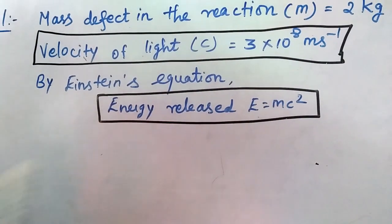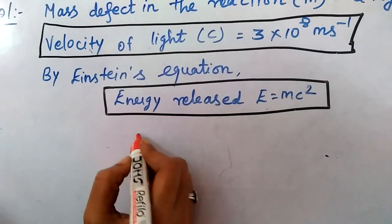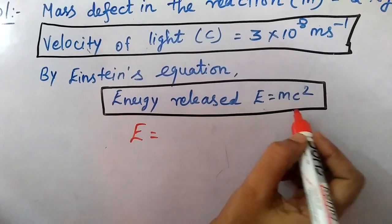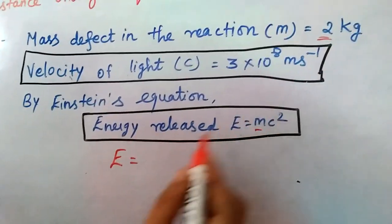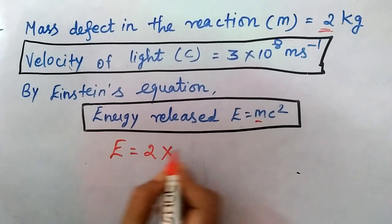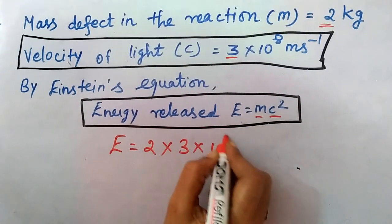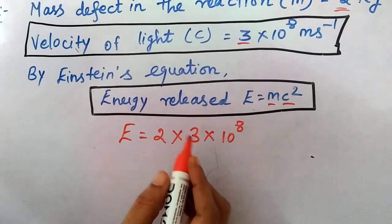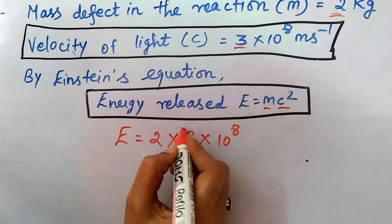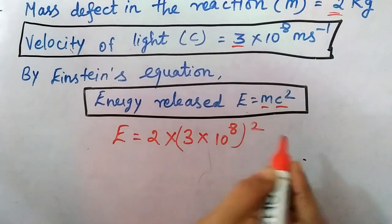We will substitute the values. E equals m. Mass we already know is 2, so 2 into, the velocity common value is 3 into 10 to the power of 8. c squared, mc squared, so this is squared.